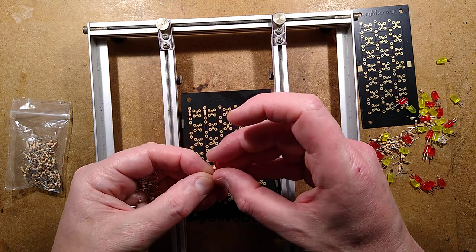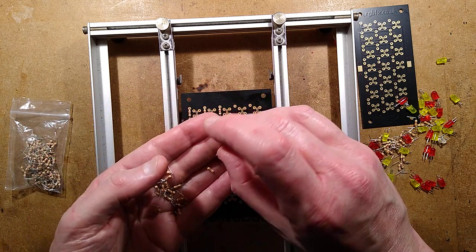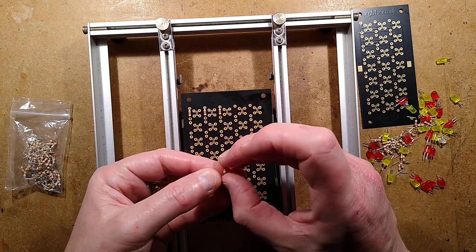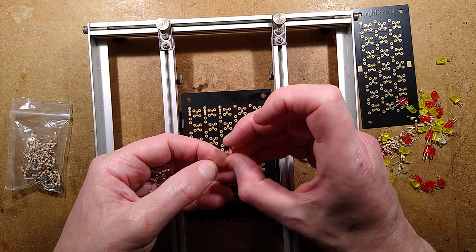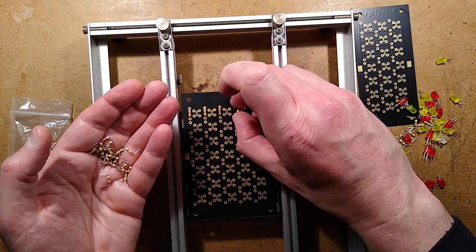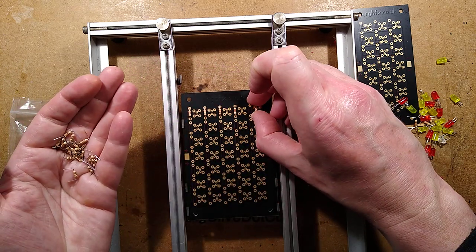When you go to, say for instance, JLCPCB slash quote, you'll find a button you can click that you can then load your file. You actually just load the whole zip file to that. Then you get the option on companies like JLC, not a sponsor, of choosing the color of the circuit board.